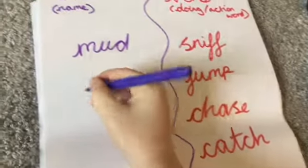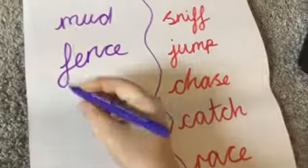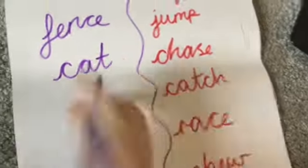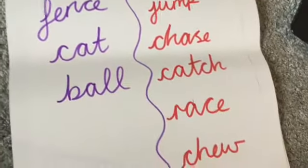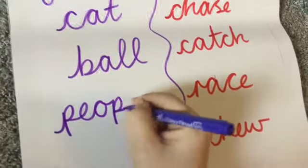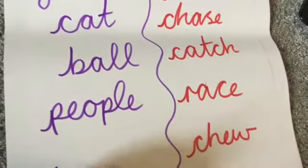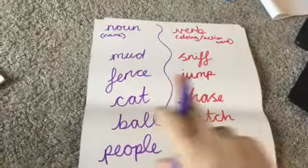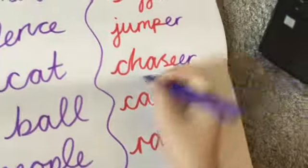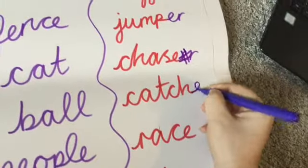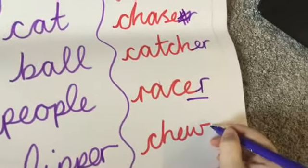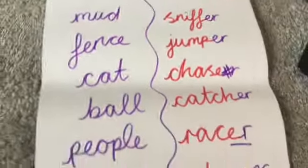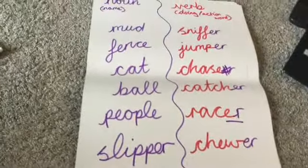I'm going to do jump - fence, fence jumper. Chase - definitely a cat, cat chaser. What do they catch? Ball. They race people - I've definitely seen dogs race people in the park. And they chew slippers. So we have now our nouns and verbs all about a dog. All they have to do to make it into a Kennings poem is add an 'er' on - be careful that chase and race already have the E there. So our dog is a mud sniffer, fence jumper, a cat chaser, ball catcher, a people racer, and a slipper chewer.